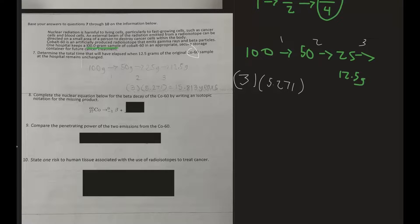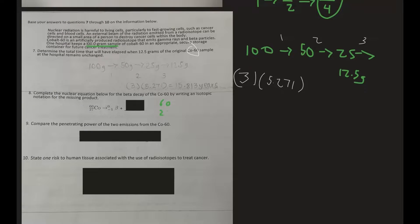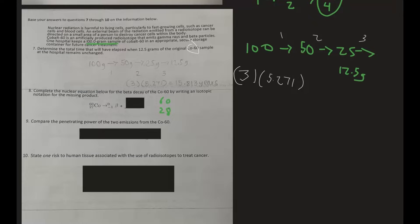Number eight: complete the nuclear reaction for the beta decay of cobalt-60 by writing an isotopic notation for the missing product. The left side mass is 60, right side is 0, so we need 60 on top. The left side charge is 27, right side is negative 1, so we need 28. What has 28 protons? That's nickel. So nickel is our notation.